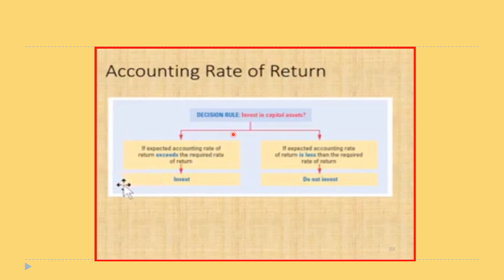The decision table: if the expected accounting rate of return exceeds the required rate of return, you invest; if it does not, you do not invest. The required rate of return here is usually the cost of capital, or the company may have a specific expected rate of return that you would compare the ARR with.